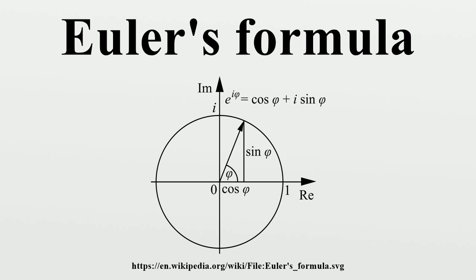Topological interpretation: In the language of topology, Euler's formula states that the imaginary exponential function is a morphism of topological groups from the real line to the unit circle. In fact, this exhibits it as a covering space.